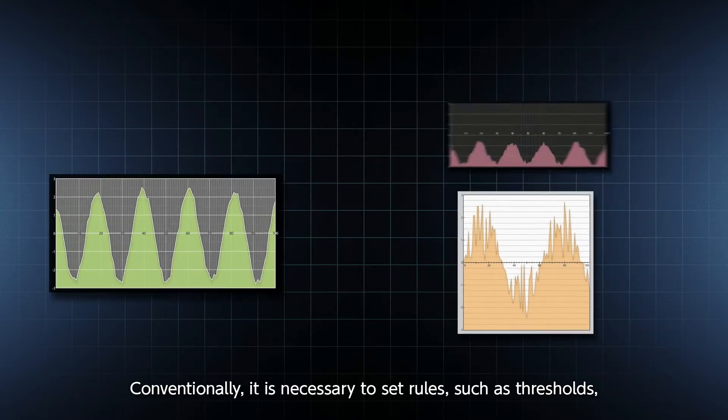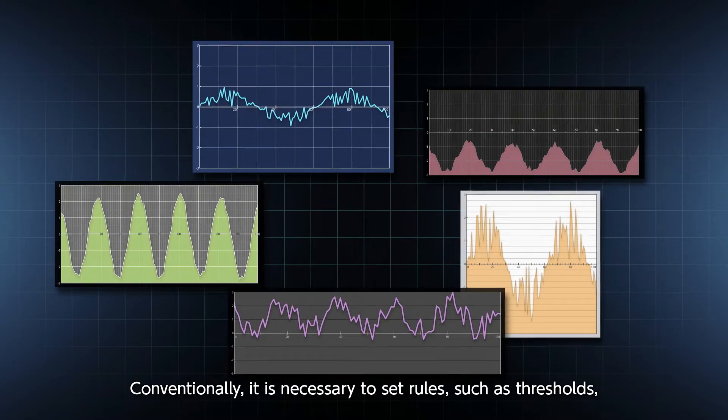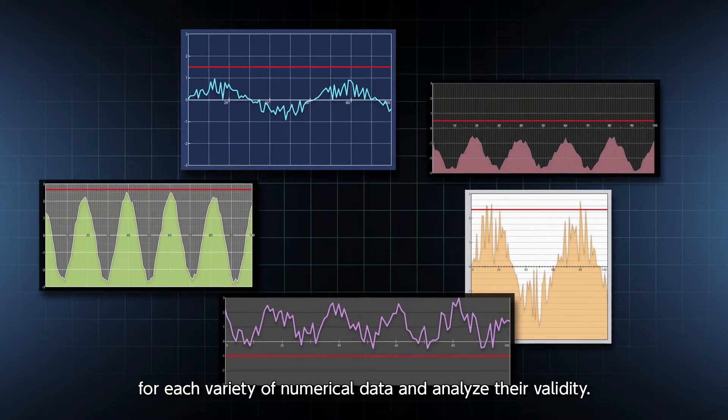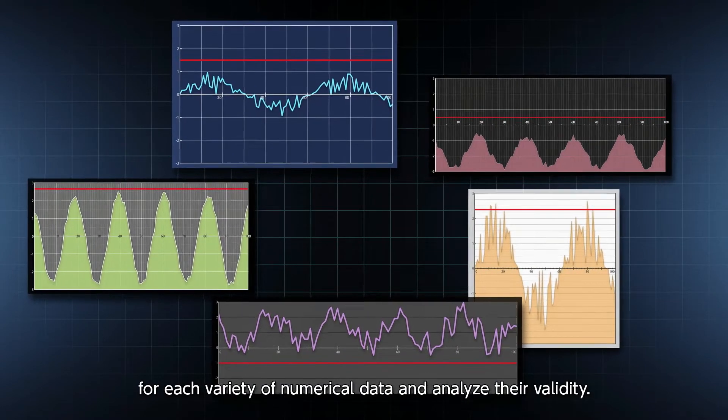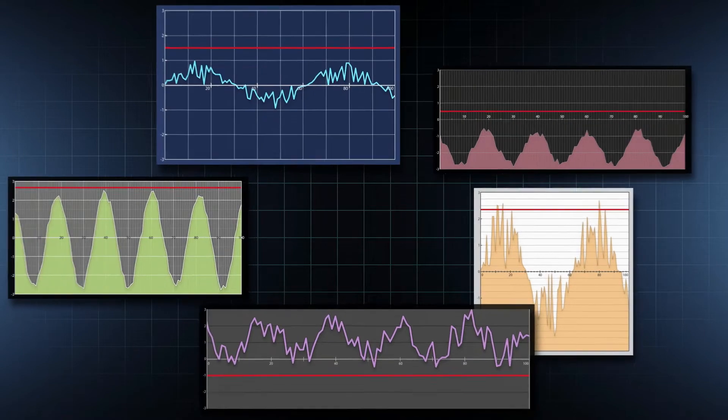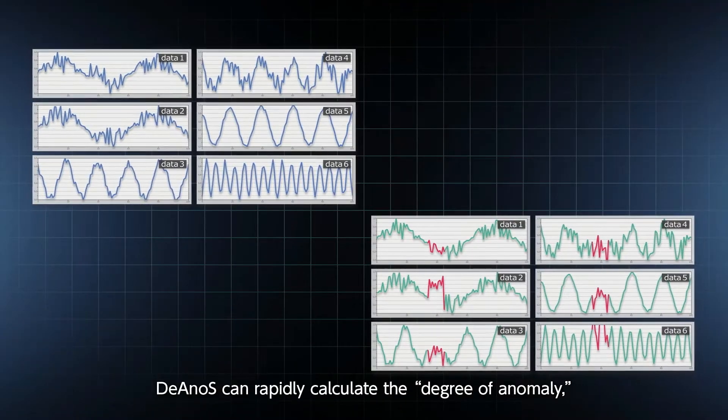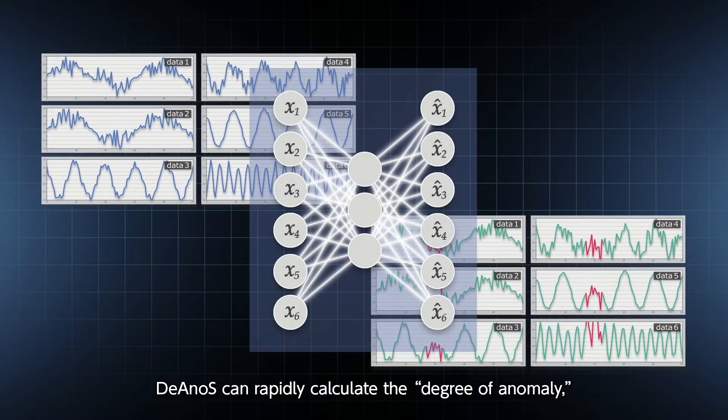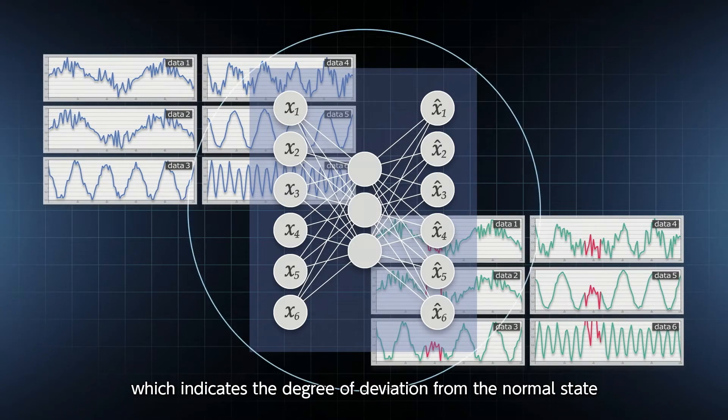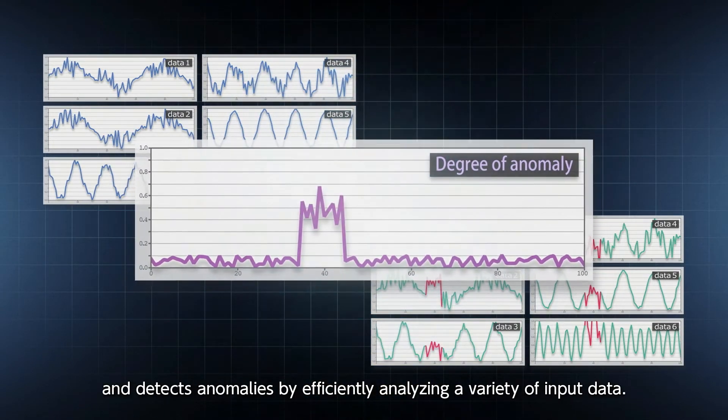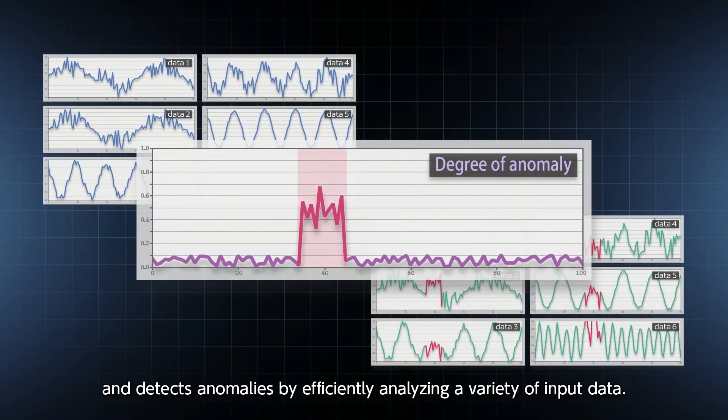Conventionally, it is necessary to set rules such as thresholds for each variety of numerical data and analyze their validity. DeAnoS can rapidly calculate the degree of anomaly, which indicates the degree of deviation from the normal state and detects anomalies by efficiently analyzing a variety of input data.